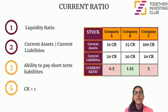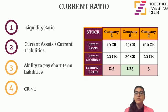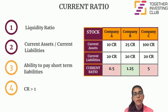Also, it's very important to note that just because Company A has a ratio which is lower than 1, does not mean that they won't be able to pay their short-term liabilities. This is because they have many ways to fund themselves, such as loans from banks.